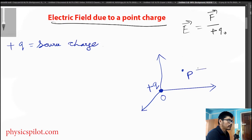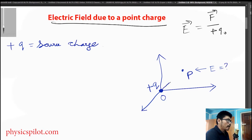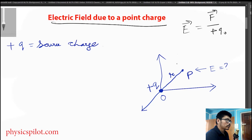Here we have the source charge, r is the distance, r-hat is the unit vector above. Now, if you have an electric field, you can use the source charge Q.